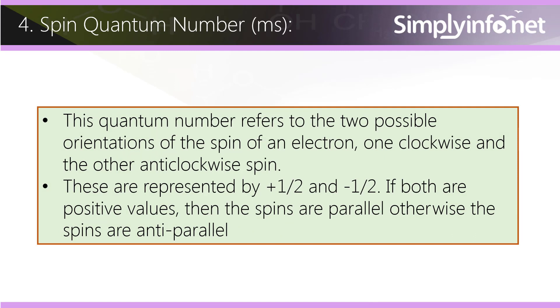One clockwise and the other anti-clockwise spin. These are represented by plus 1/2 and minus 1/2. If both are positive values, then the spins are parallel; otherwise, the spins are anti-parallel.